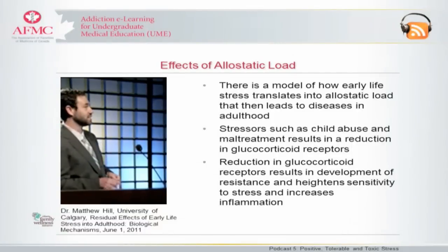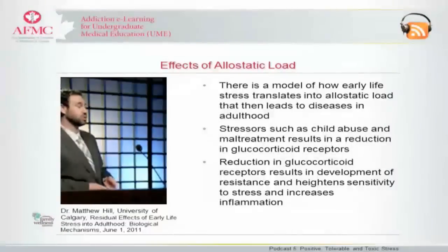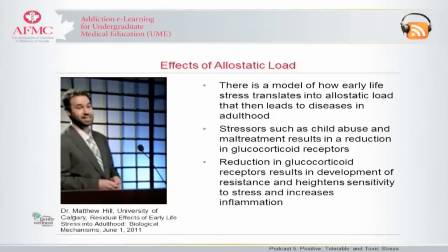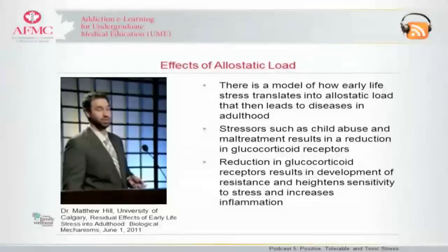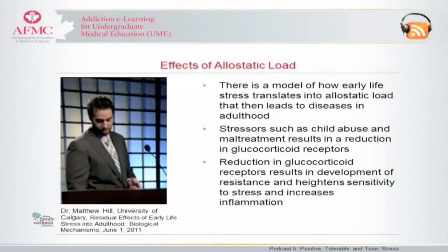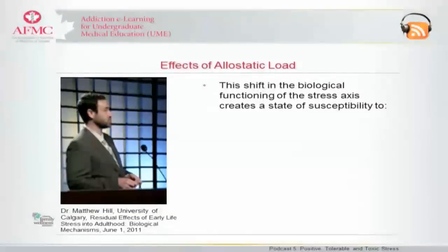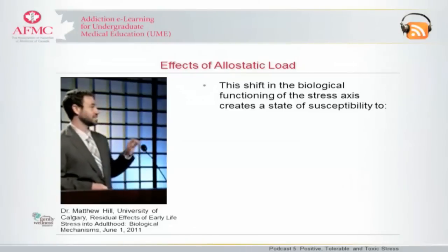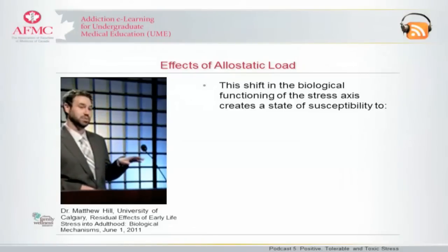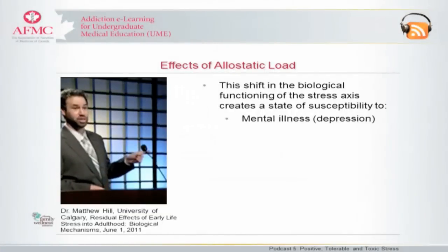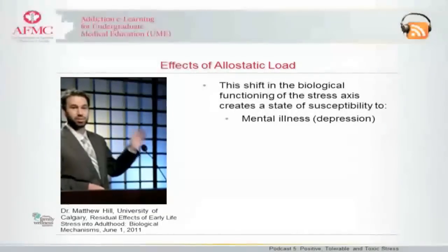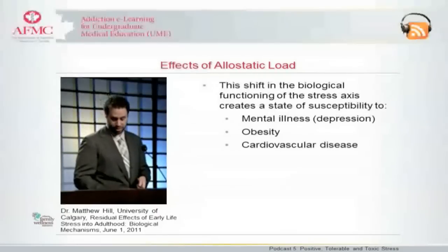This reduction in the glucocorticoid receptors results in development of resistance, which then heightens the sensitivity to stress, impairs glucocorticoid feedback, sensitizes CRH signaling pathways, and increases inflammation. This shift in the functioning of the stress axis essentially creates a state of susceptibility to both mental illness — especially depression — as well as other health conditions such as obesity and cardiovascular disease.